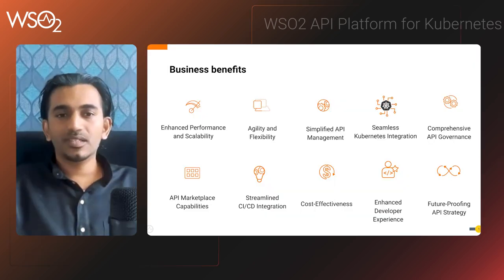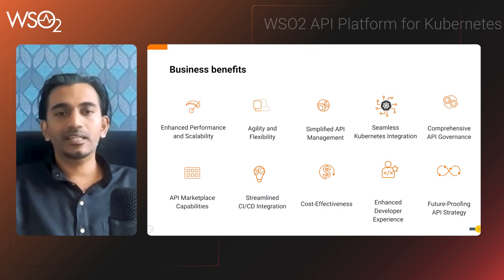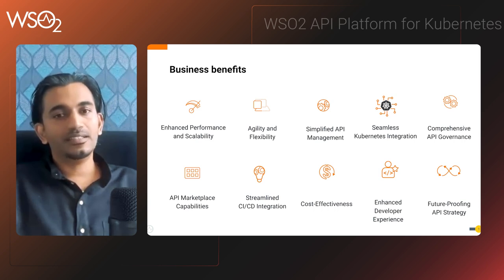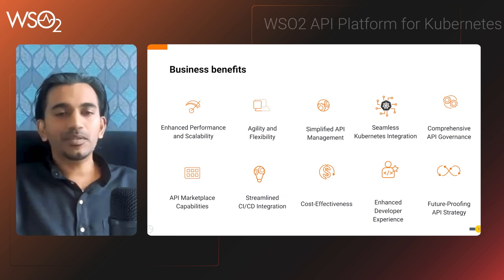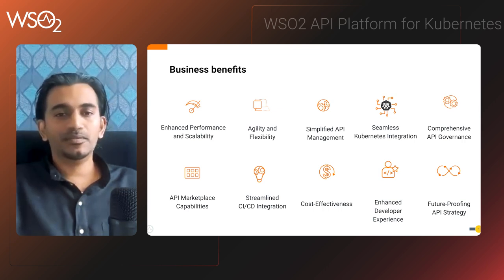The second question: what are the key business benefits organizations can expect from using WSO2 APK? First is enhanced performance and scalability — it leverages Kubernetes for efficient scaling and high performance. It also supports agility and flexibility through microservices architecture, simplifying API management and allowing users to apply and enforce API policies without too much effort.